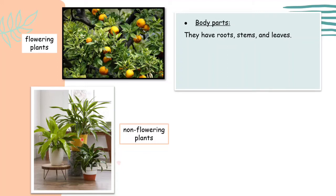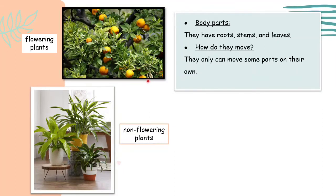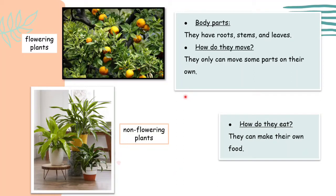Non-flowering plants don't have flowers or fruits. How do plants move? They cannot move by themselves — plants can only move some parts of their own body. How do they eat? They can make their own food.